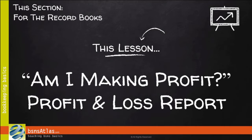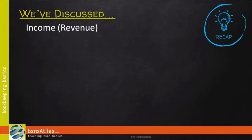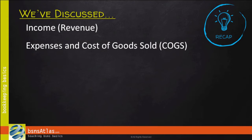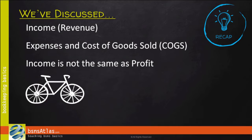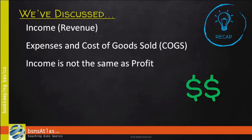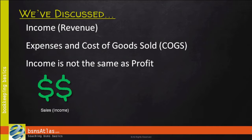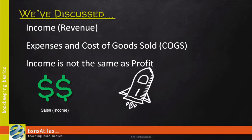Am I making a profit? That's the title of this lesson. In previous lessons, we've dealt with income, sometimes known as revenue, and expenses, and along with that, cost of goods sold, which are a type of expenses. And when we were talking about income, I mentioned to you that income is not profit. Those are not the same thing, and here's why. Profit is not how much was brought in — that's income. Profit is how much is left after you subtract the expenses from your income.